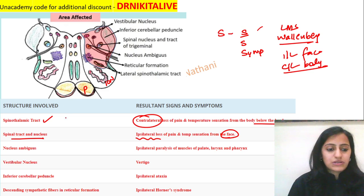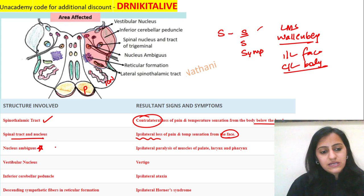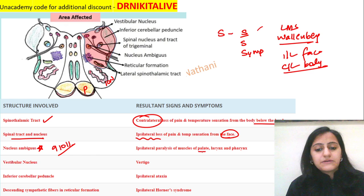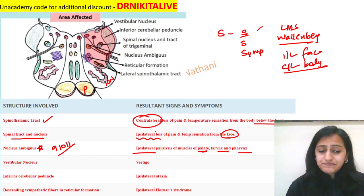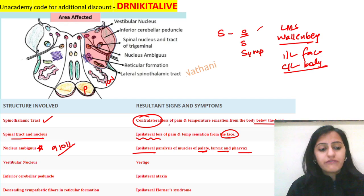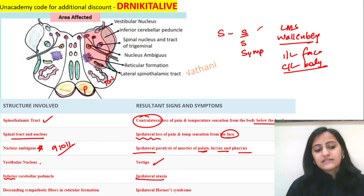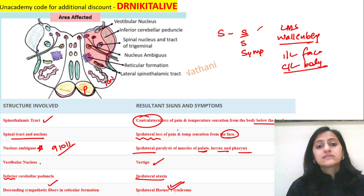The nucleus ambiguus contains cranial nerve nuclei 9, 10, 11, affecting the palate, larynx, and pharynx on the ipsilateral side, causing dysphagia — a very important component of lateral medullary syndrome — and diminished gag reflex. The vestibular nucleus causes vertigo. The inferior cerebellar peduncle from the medulla causes ipsilateral ataxia. Involvement of sympathetic fibers causes Horner's syndrome on the same side.